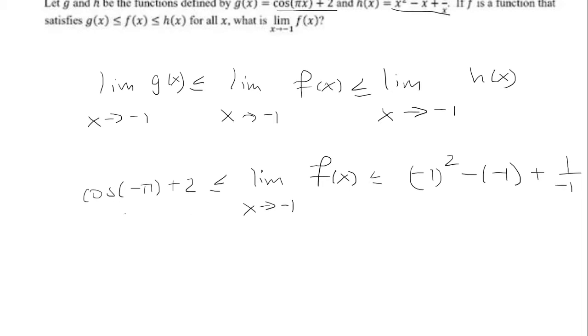So cosine of negative pi is the same thing as cosine of pi, which is negative 1. And then I'm going to add 2 to that, so that would be 1.